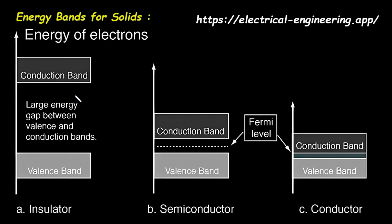Now, let's look at the first diagram, labeled A, insulator. Here, we see the valence band at the bottom, shown as a light gray rectangle — this band is filled with electrons. Above it, we see the conduction band, a dark gray rectangle, which is empty. Notice the large space between them. The diagram explicitly states: large energy gap between valence and conduction bands. In an insulator, the energy required for an electron to jump from the valence band to the conduction band is very large — like needing a huge amount of energy to climb a very tall staircase. Under normal conditions, like room temperature, the electrons simply don't have enough energy to make this big jump. Because no electrons can reach the conduction band, there are no free electrons to carry an electric current. This is why materials like glass, rubber, and plastic are insulators — they do not conduct electricity.